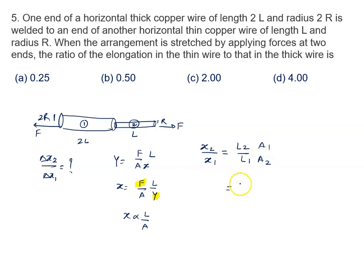Second one, the length is L. First one length is 2L. Area of the first one, that is π(2R) whole square, that is 4R square. A1 first - sorry, A2 is π into R square.